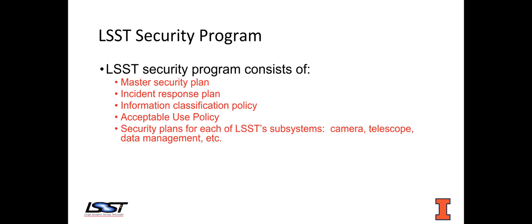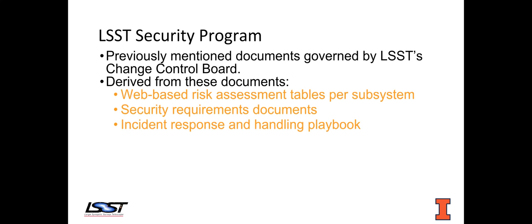To start with the security program: it's fairly simple. There's a set of documents headed by a master security plan. We have an incident response plan, the aforementioned information classification policy, and an acceptable use policy. LSST is divided into subsystems — camera, telescope, data management, and so forth — and each of these subsystems has its own sub-plan specific to that subsystem. Those documents are governed by LSST's change control board; changing those documents requires approval by the change control board.